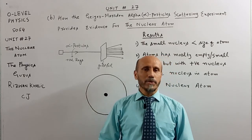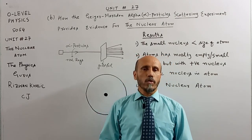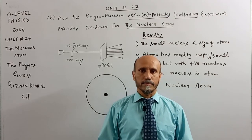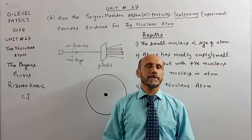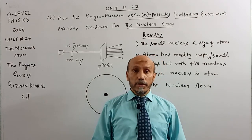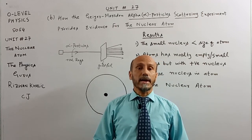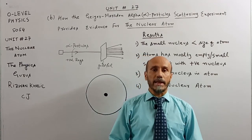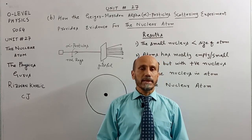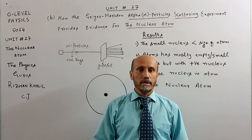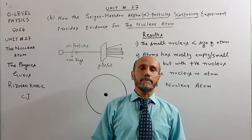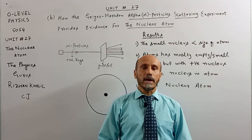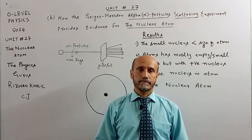Assalamu alaikum dear students. Today we will discuss unit number 27 - the nuclear atom. In this unit we will discuss different terms related to the nuclear atom: what is the nuclear atom, the structure of the nucleus, what particles exist inside the nucleus, atomic mass number, atomic number, nucleide notation, and finally isotopes and their uses in daily life. Let's start with learning outcome B.